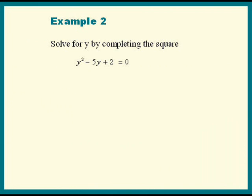The first step is always to move that constant term to the other side. So let's do that and leave a space. The positive 2 moved to the other side becomes negative 2.